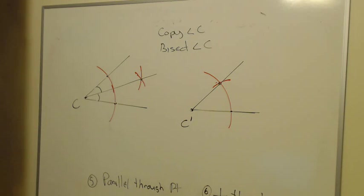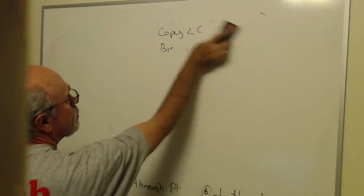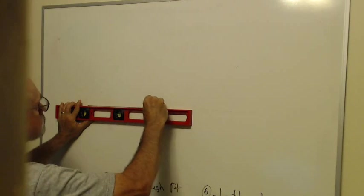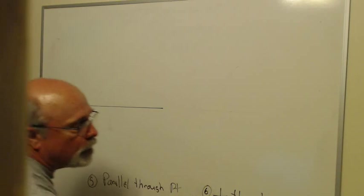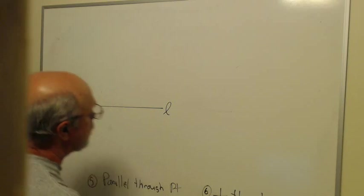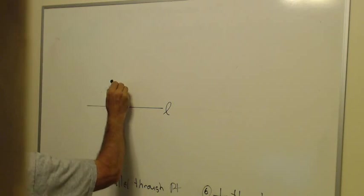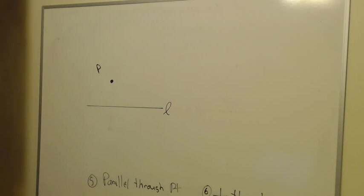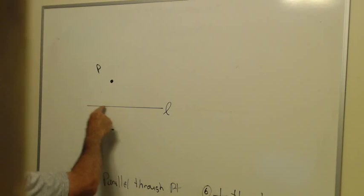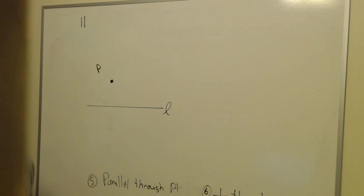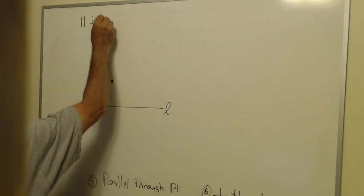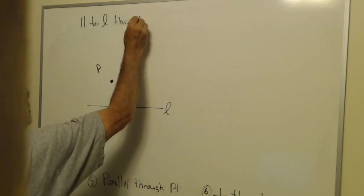Our last two constructions deal with a line and a point that's not on that line. I will draw a line and put a point up here that's not on it. On your paper, the line was called L and the point was called P. What I'm going to do with this is construct a parallel to L through P, parallel to L through the point P.